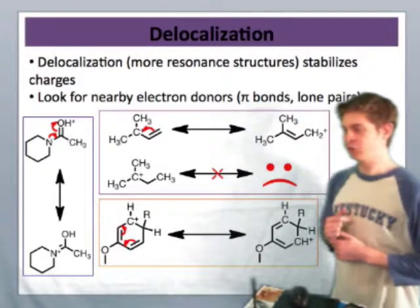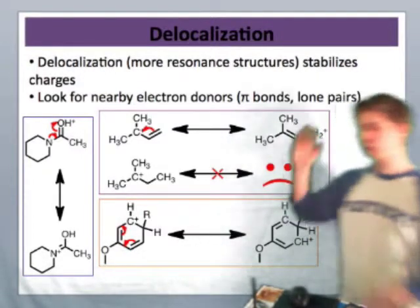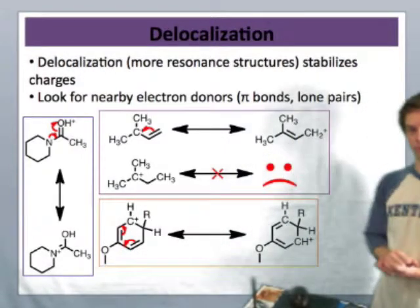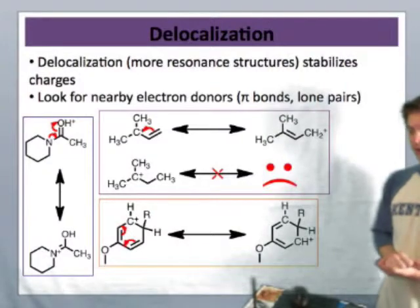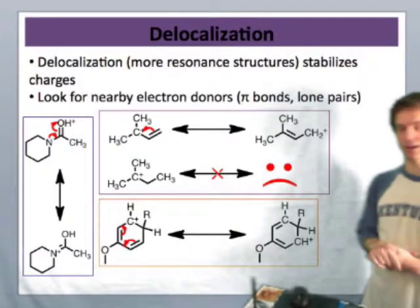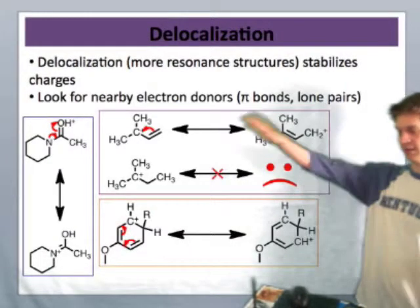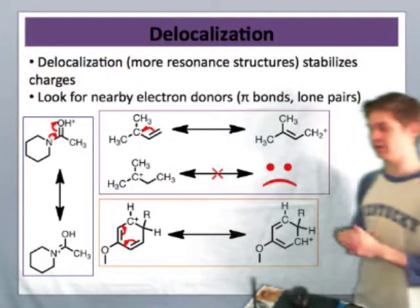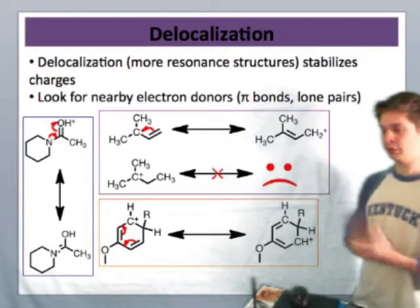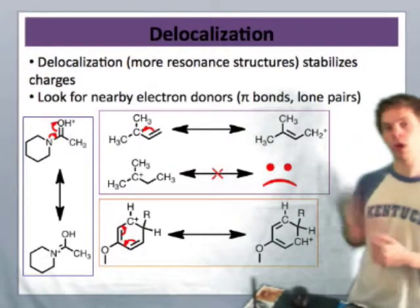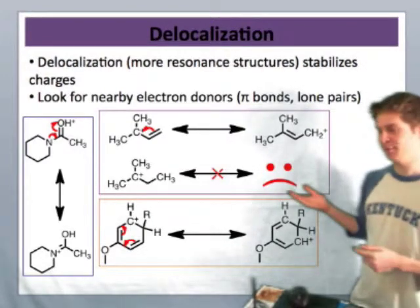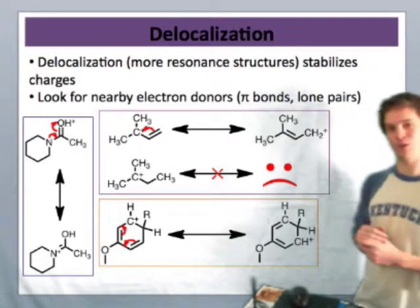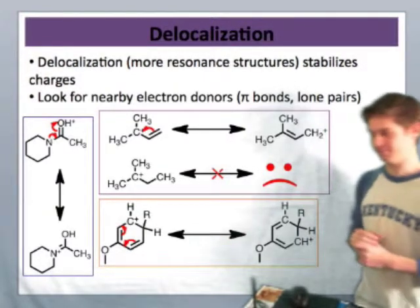As a result of that extra resonant structure, the allyl cation — which is the name of this cation — is stabilized relative to the cation shown below, which is much more unstable because it has only one resonant structure.